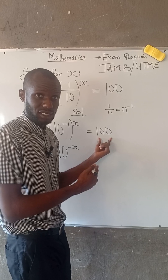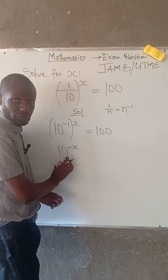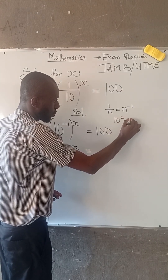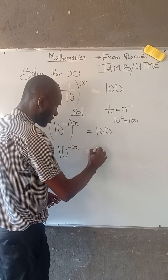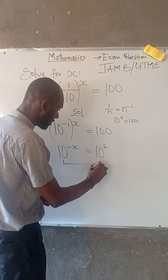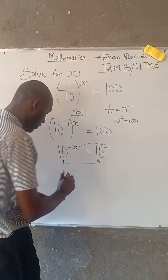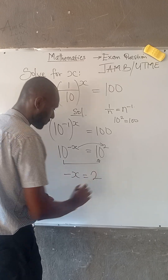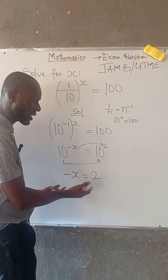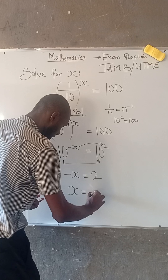Now, look at the right-hand side. What can be done to 100 to express it in the form of 10? We know that 10 to the power of 2 is equal to 100. So this becomes 10 to the power of 2. Since their bases are the same, we equate their powers: minus x is equal to 2. We can't leave the value with a negative sign, so we multiply the equation by negative 1, giving us x is equal to minus 2.